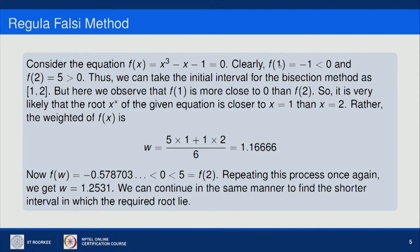Observe that f(1) = −1 is quite close to 0 compared to f(2) = 5, so it is very likely that the root is closer to x = 1 than to x = 2. In bisection we would calculate c₁ = 1.5 as the midpoint. But in Regula Falsi we find w = (f(b)·a − f(a)·b) / (f(b) − f(a)). With a = 1, b = 2, f(a) = −1, f(b) = 5, we get w = 1.16666.